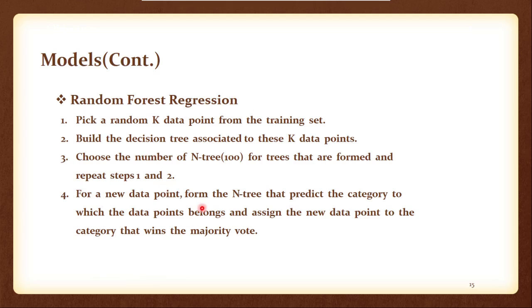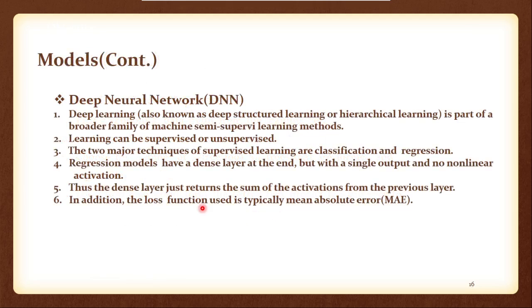And the last one which is the Deep Neural Network. This is the most common and it is heavily used in many other domains as well. So in deep learning there are hierarchical learning layers, and this could be supervised learning or unsupervised learning. And in the supervised learning classification, there are classification or regression problems, and our glucose level detection is basically a regression problem.